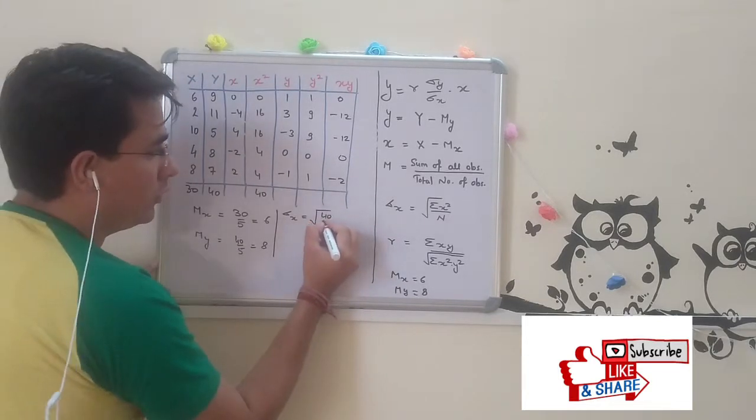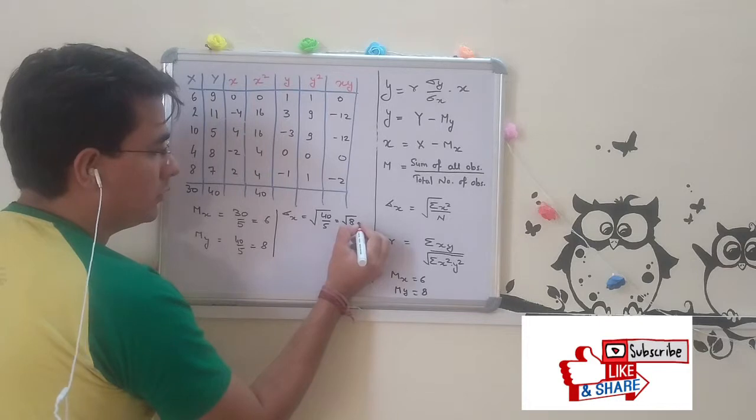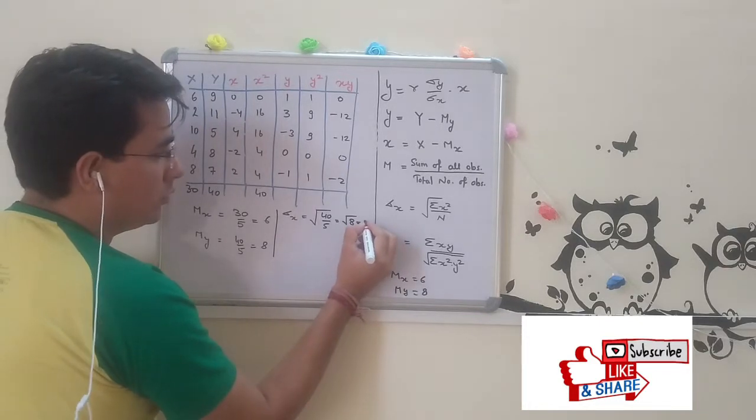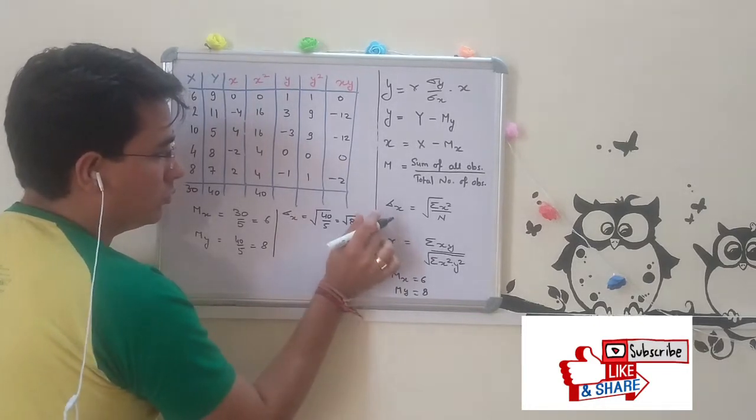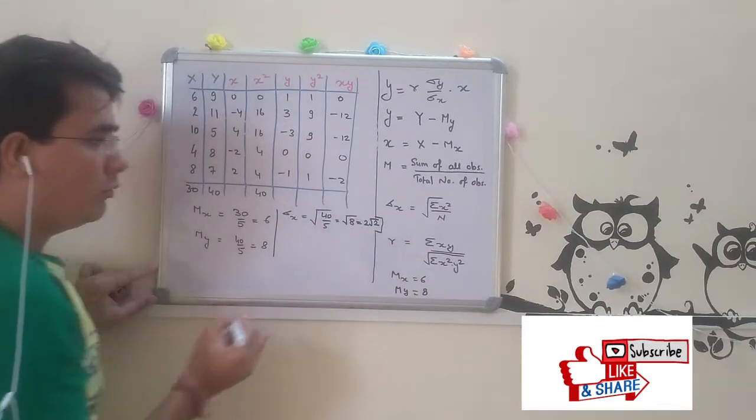y squared: 1, 9, 9, 0, 1. This is sigma x squared equals 40. We got 40 over 5, that means we got it root 8, which is 2 root 2.